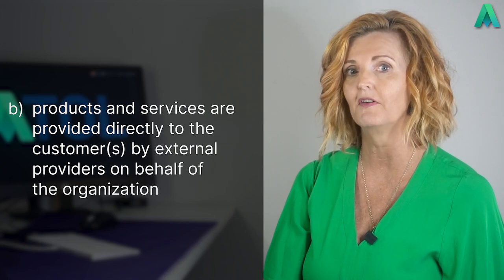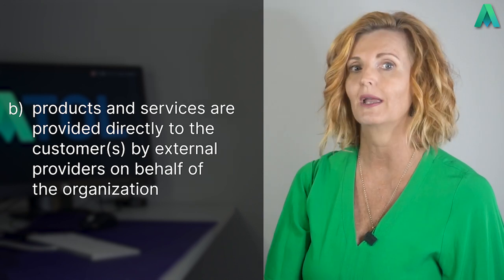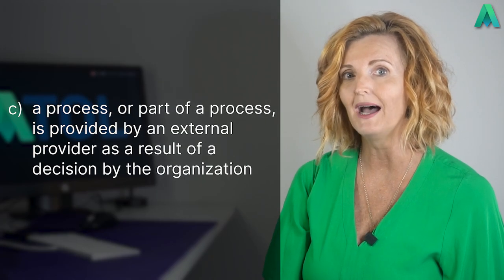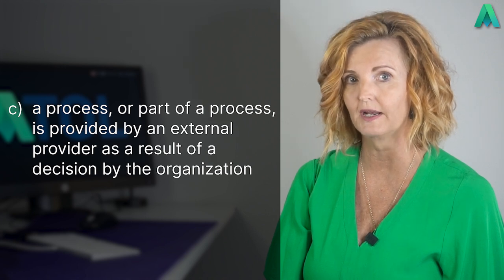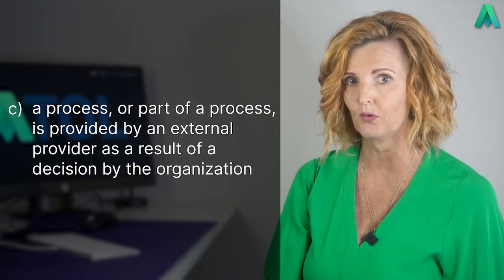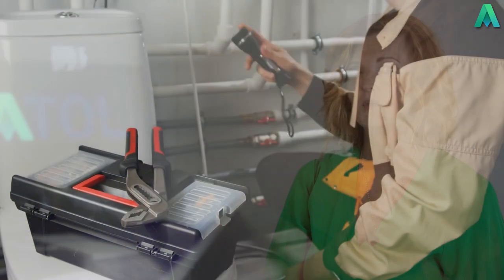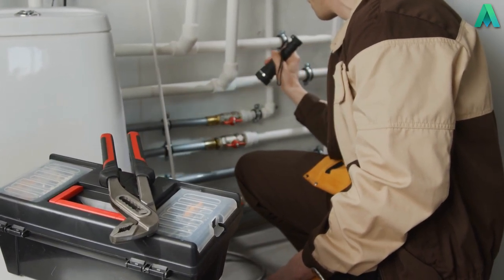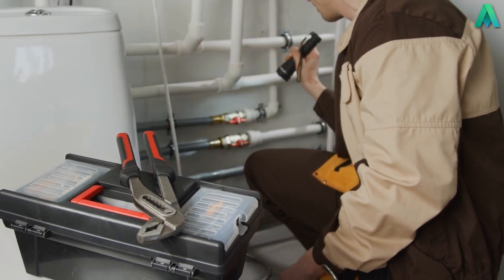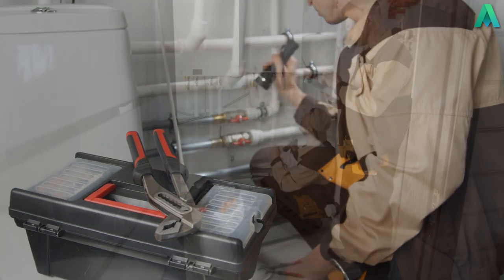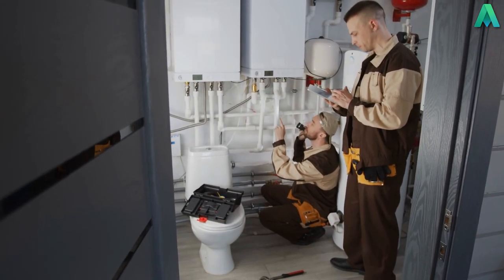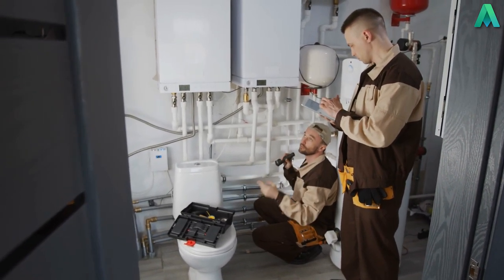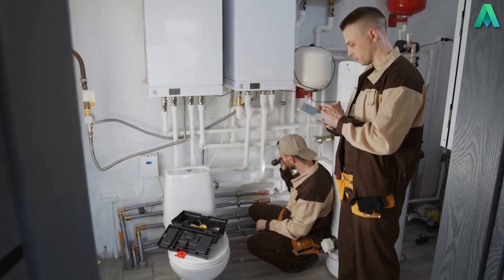These controls also need to be applied when B: products and services are provided directly to the customer by external providers on behalf of the organisation. And C: a process or part of a process is provided by an external provider as a result of a decision by the organisation. An example here might be if you own a plumbing business and you contract some work out to other qualified plumbers that are independent contractors, not employees. They are dealing directly with your customer delivering a product and service ordered from you. This could also be a process or part of a process like using a consultant to conduct a review and provide a report for your business to then action.